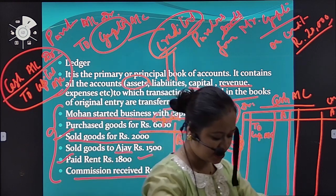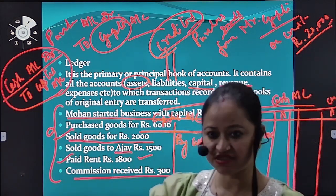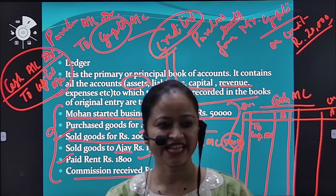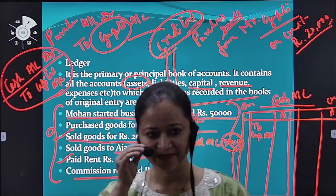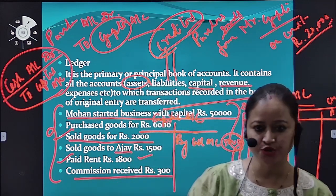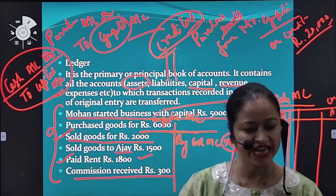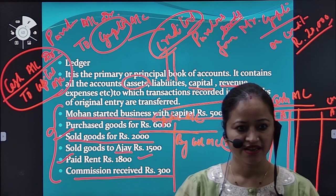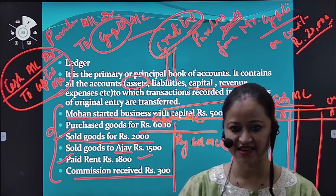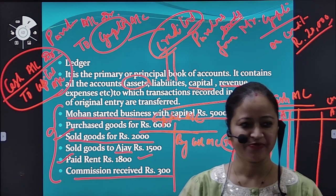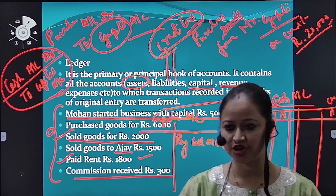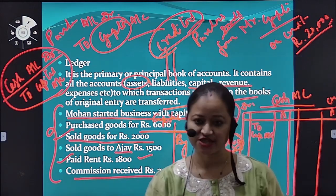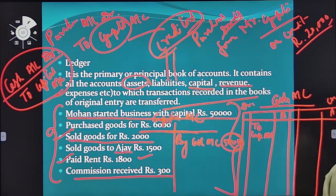Today you have learned what is an account, the various types of accounts, the rules of various accounts, and a few journal entries. In the next class we'll do more journal entries and how to post into ledger. See the rules you have written in your copy, try to do it yourself, and you'll understand. That's all for today, thank you.